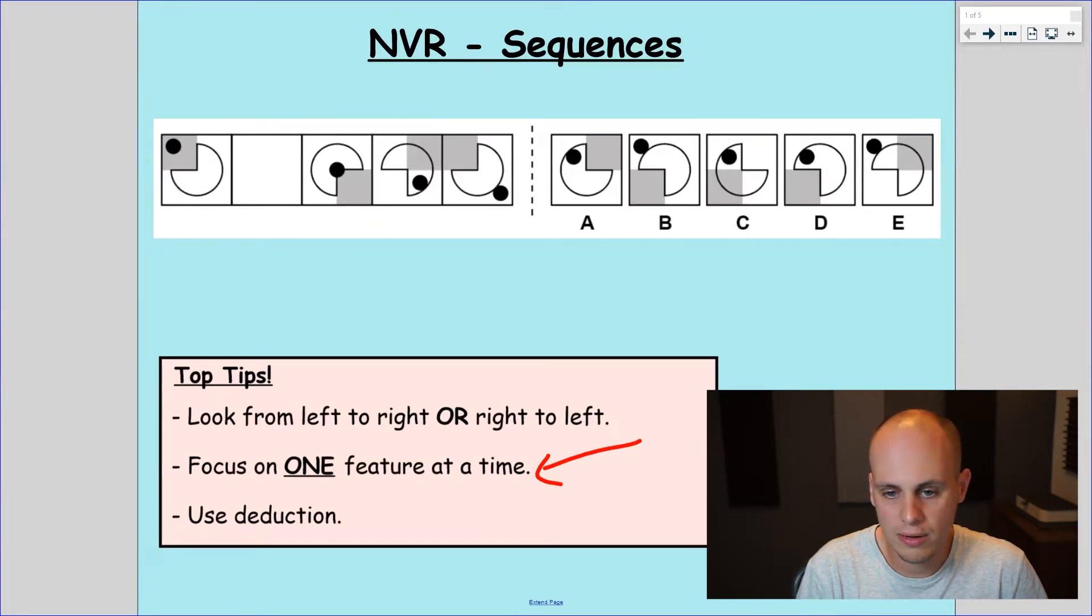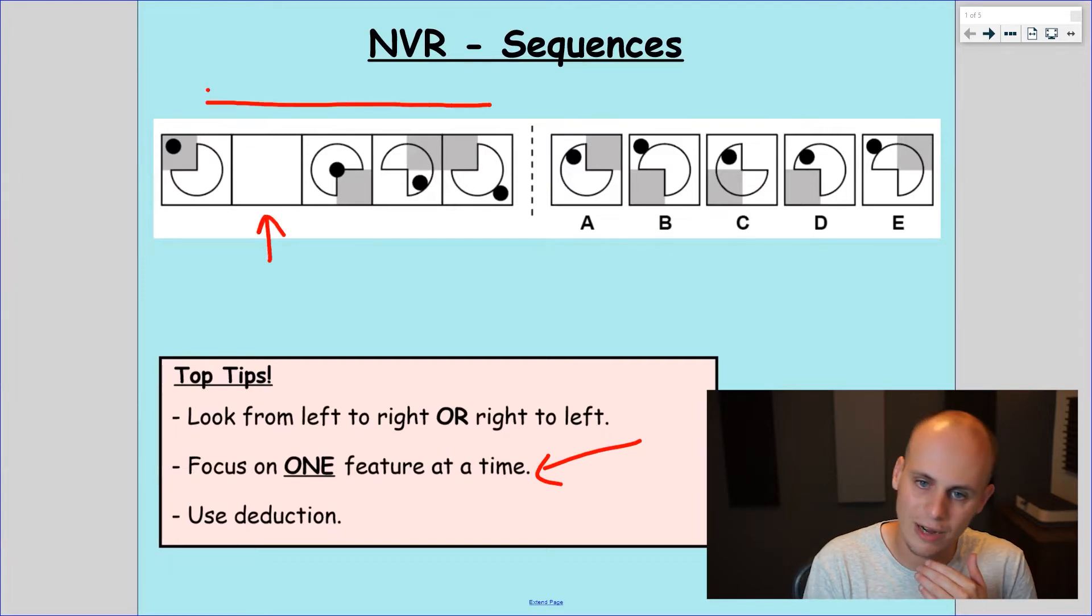Because the box in the sequence is missing quite near the start, I'm actually going to look right to left because I get a bit more of the sequence to kind of understand the pattern before I'm missing one here. So the dot is in the bottom right, then it's a bit further towards the middle, but not quite the middle. Then it's the middle, then it's missing, and then it's in the top left. So quite clearly, that dot is moving in diagonal pattern across the square.